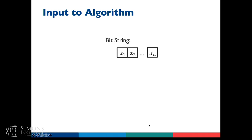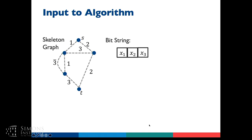The input to this ST connectivity algorithm is a bit string — bits that can take value 0 or 1 — and also what I call a skeleton graph. The skeleton graph tells you where edges might be in the graph. For the edges that might be present, each one is labeled by one of the bits in the input string or by its negation. So once we know the assignment of the bits, that allows us to assign edges to the skeleton graph. Every bit string now corresponds to a graph.